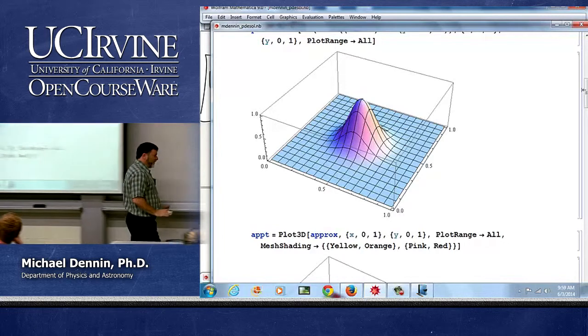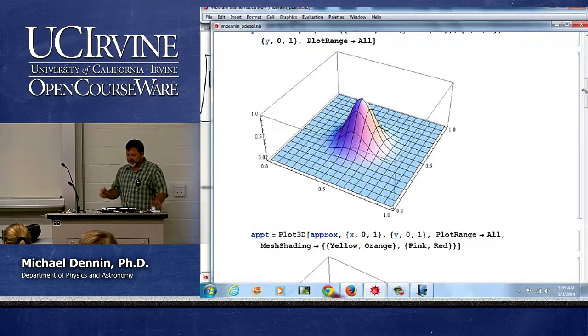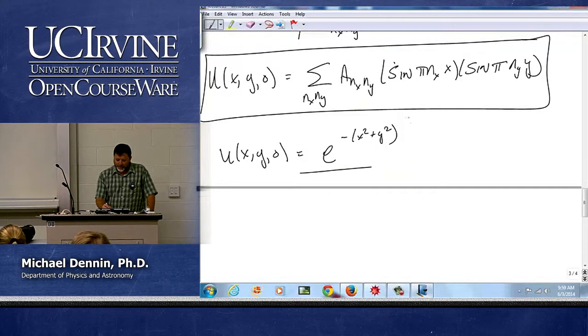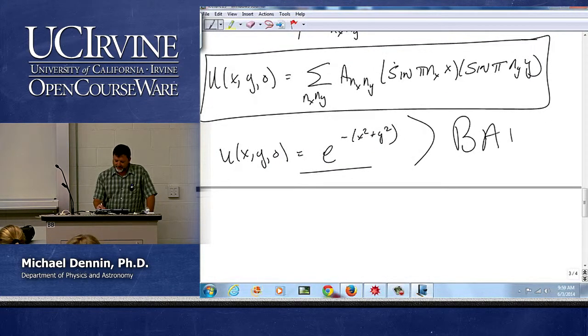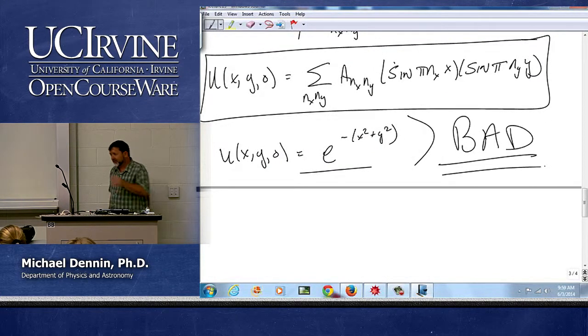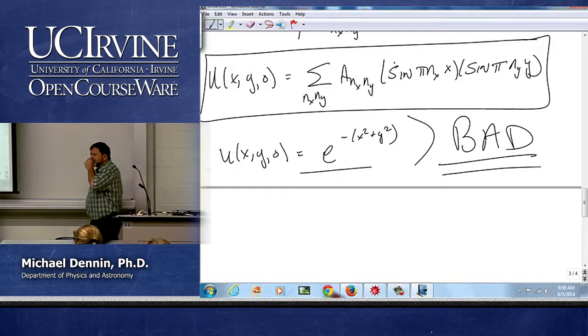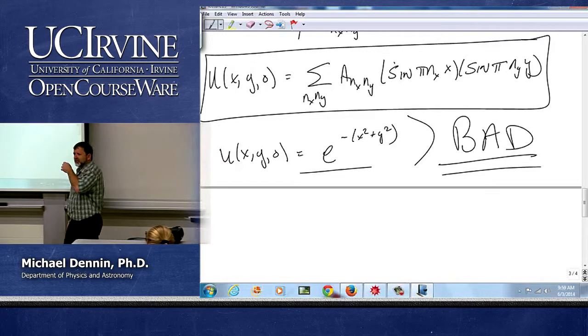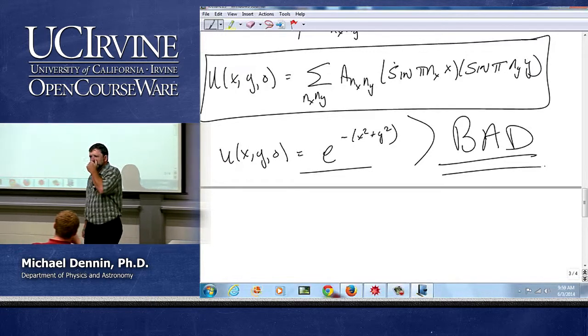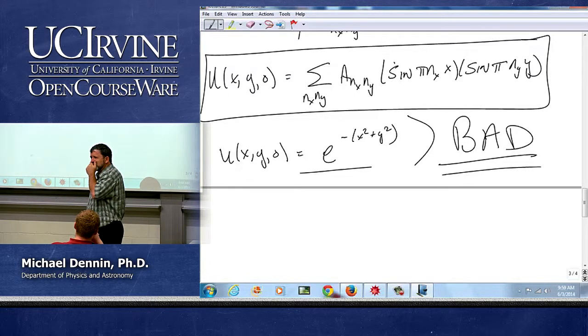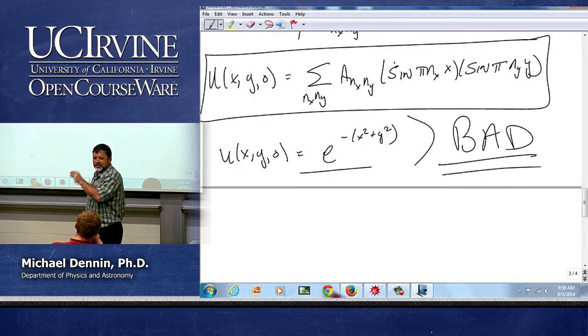However, as nice as the Gaussian is, it's a nice little smooth function, it's good for starting, why is this bad? What's wrong with this initial condition? Talk to the person next to you, think about the problem we're doing, why is this a horrible initial condition?